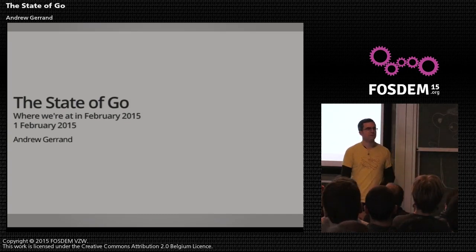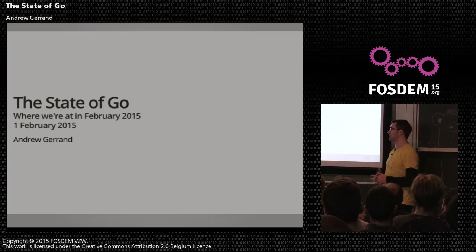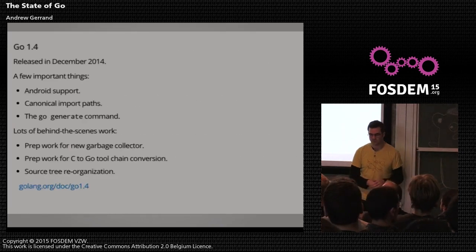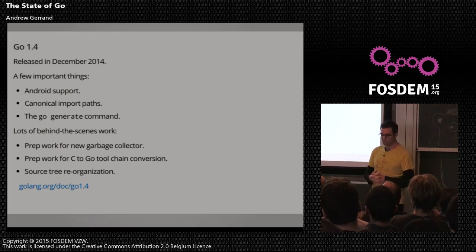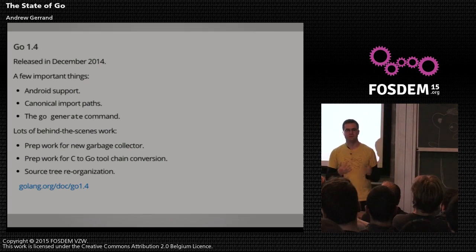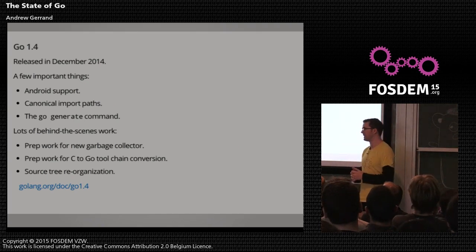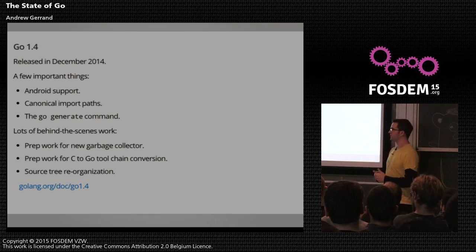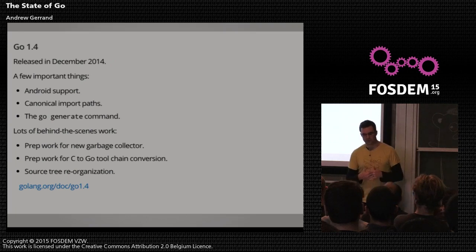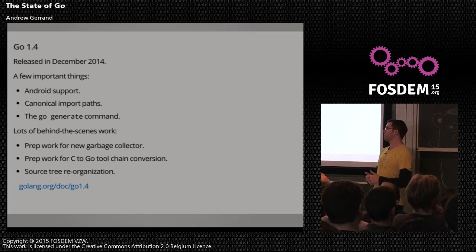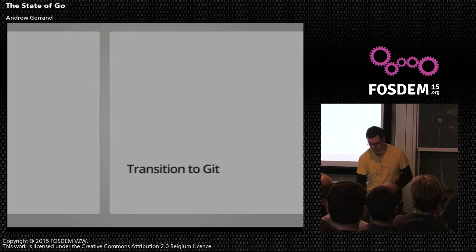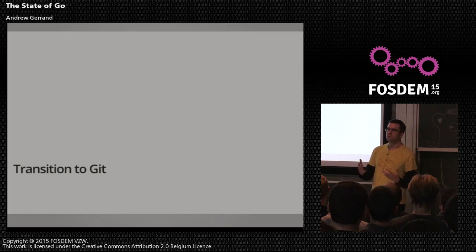Right now I'm going to give my talk on the state of Go — basically a state of the union, where the project is at this point in time. In December we released Go 1.4. There are some important things: we introduced the beginnings of Android support, canonical import paths, the go generate command, and a lot of preparation work for future releases — including prep work for the new garbage collector and conversion of the toolchain from C to Go.